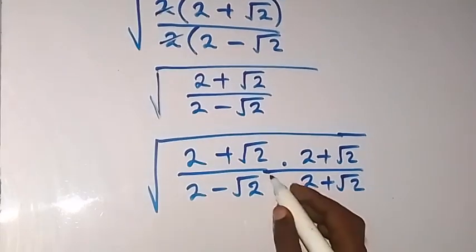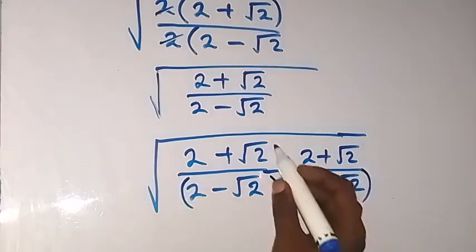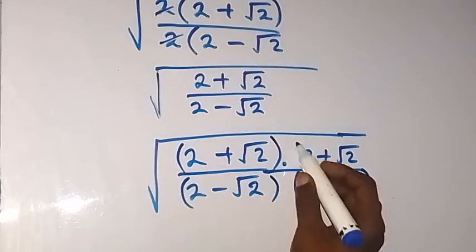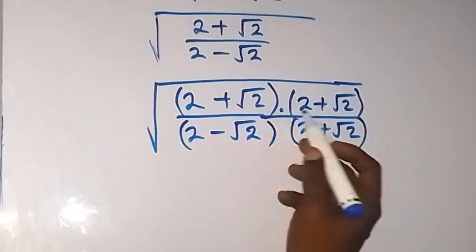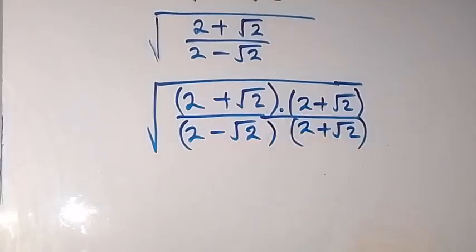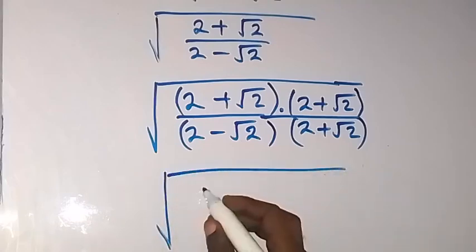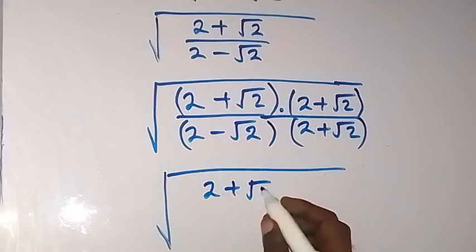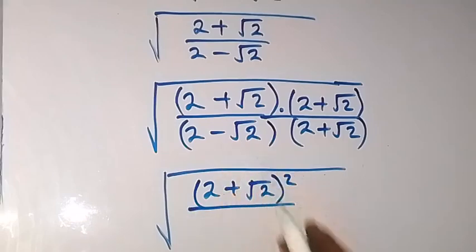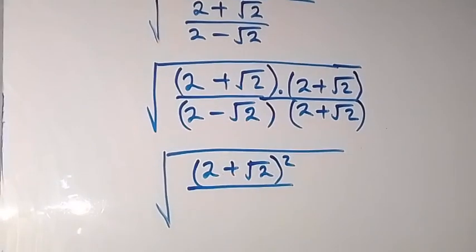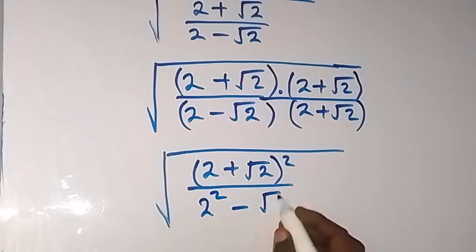This multiplies each other, and this also multiplies each other. What we have in the numerator is a number multiplied by itself, so that's (2 plus root 2) squared. This is the square root of (2 plus root 2) squared, divided by the conjugate product, which is 2 squared minus (root 2) squared.